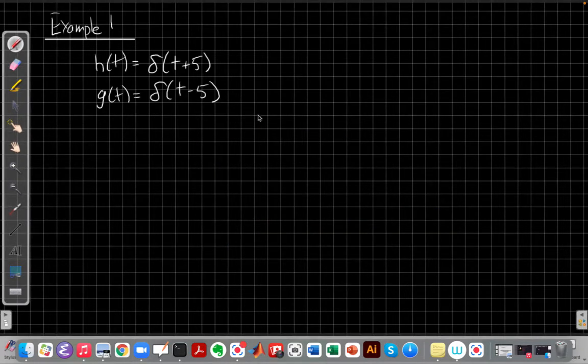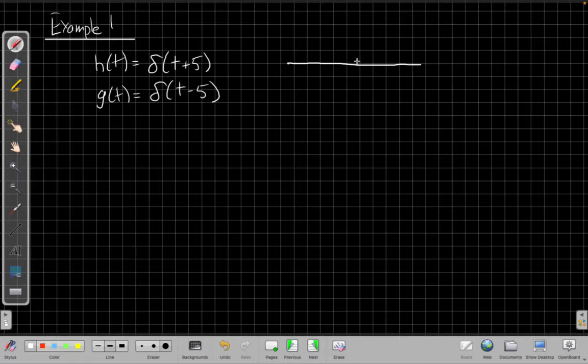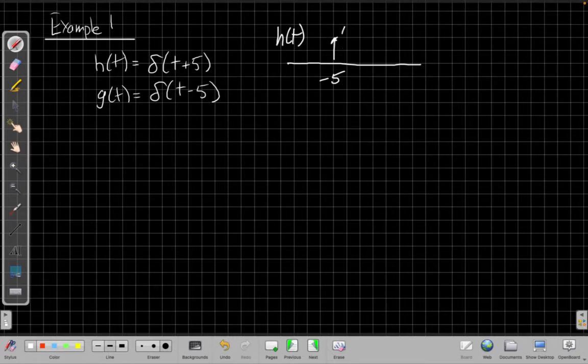So let's look at a very simple example where both of the h(t) and g(t) are impulses. And the first one is an impulse, this would be at minus five, right? This is my h(t) with area one.